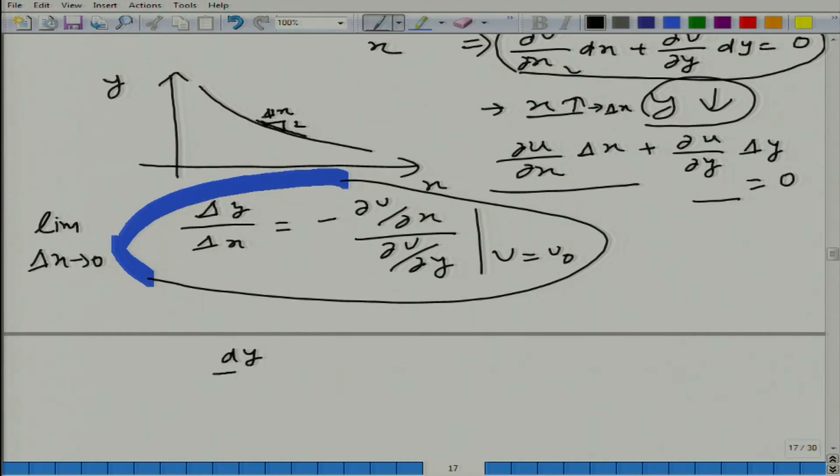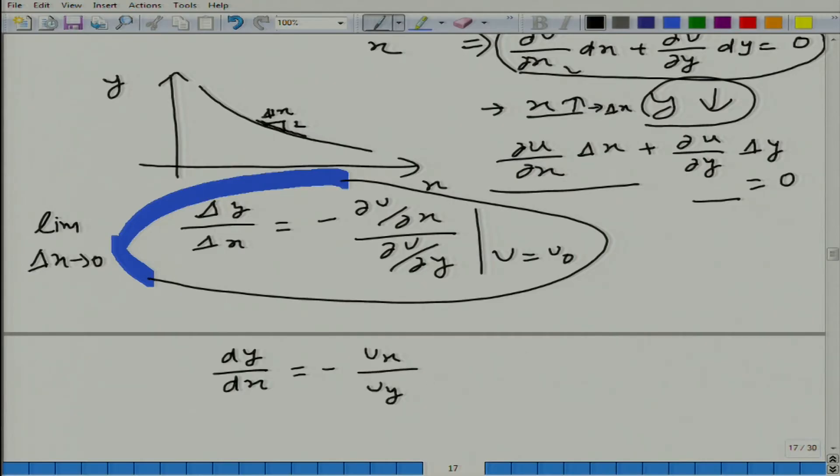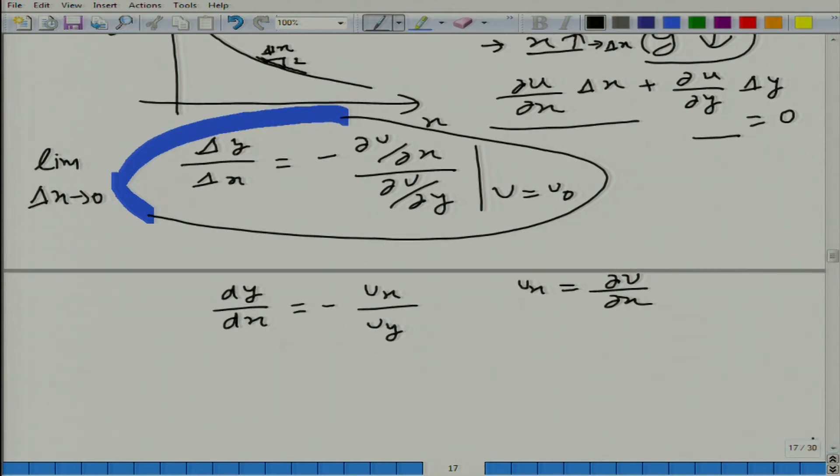And what we are getting? Δy/Δx is equal to u_x divided by u_y. u_x is nothing but ∂u/∂x. And what is this? How did we define it earlier? MRS is nothing but, this was earlier defined as MRS.